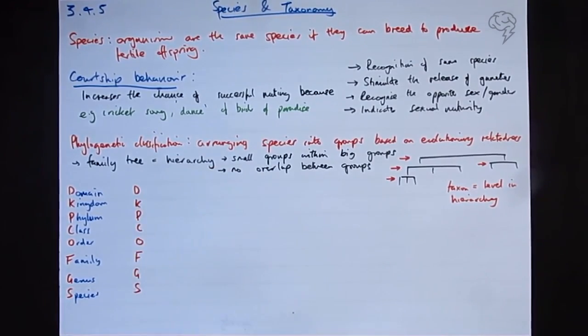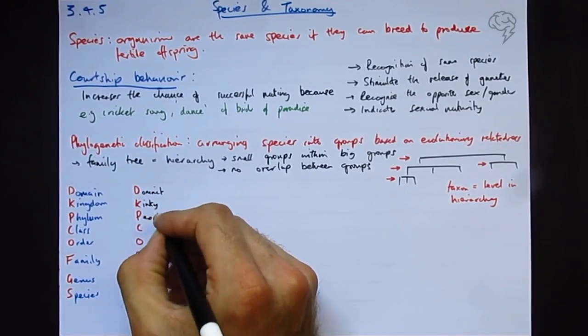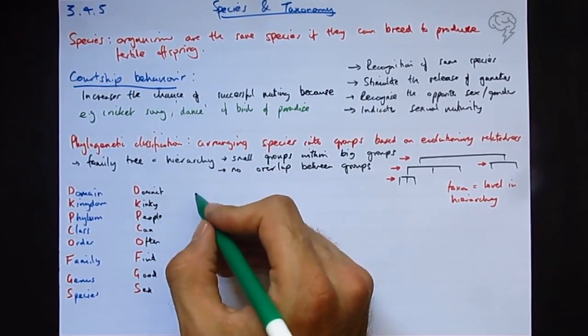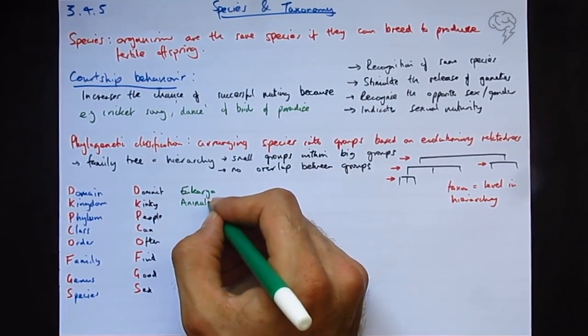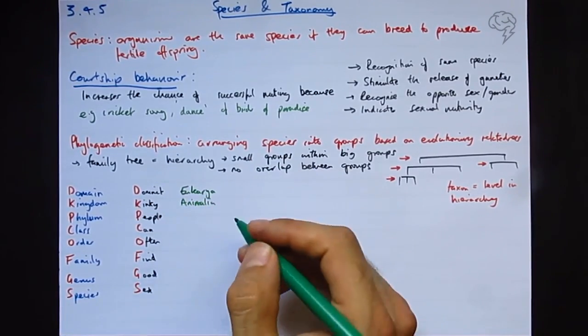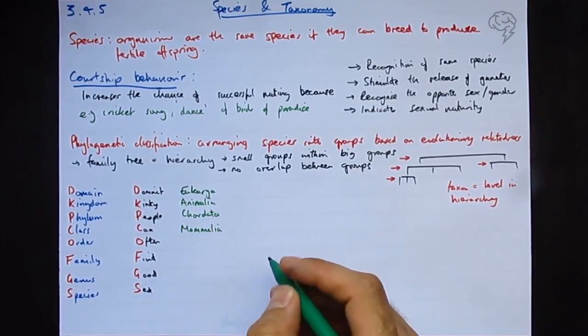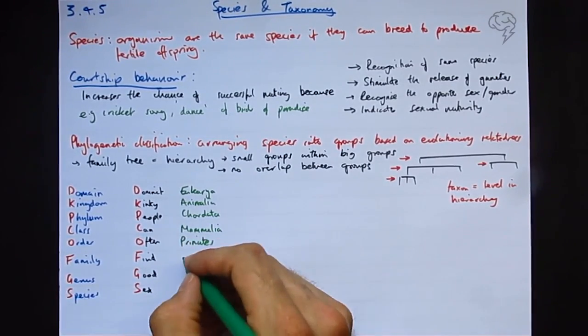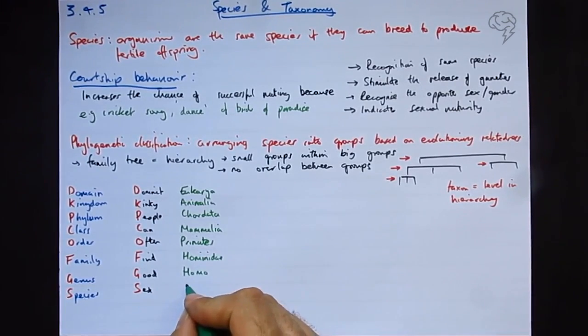So my acronym for this, I'll change color, dominant kinky people can often find good sex. An example for humans, we are domain eukarya, we are kingdom animalia, we are phylum chordata, we have a backbone we are a chordate. And then class, we are mammalia, so we're mammals. Order, we are primates. Family, we are hominidae. The genus is homo, and the species is sapiens.